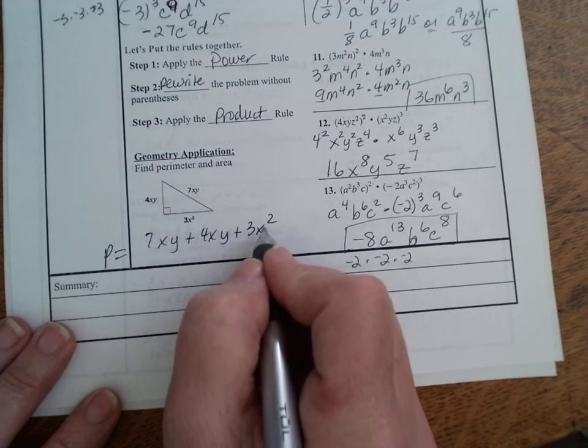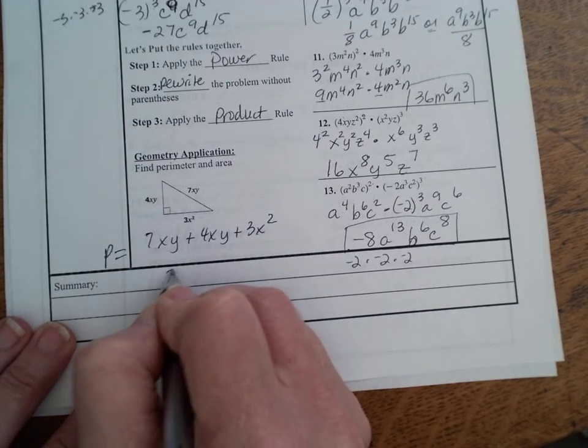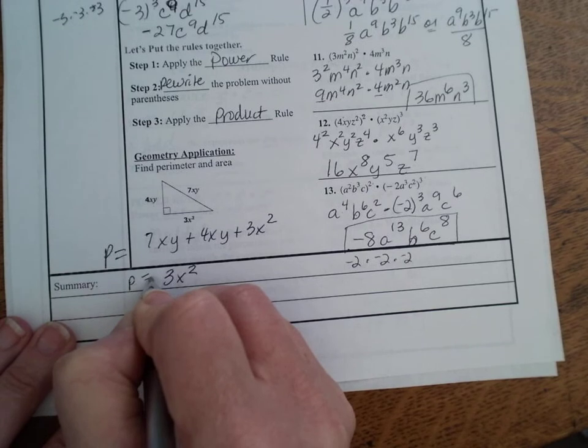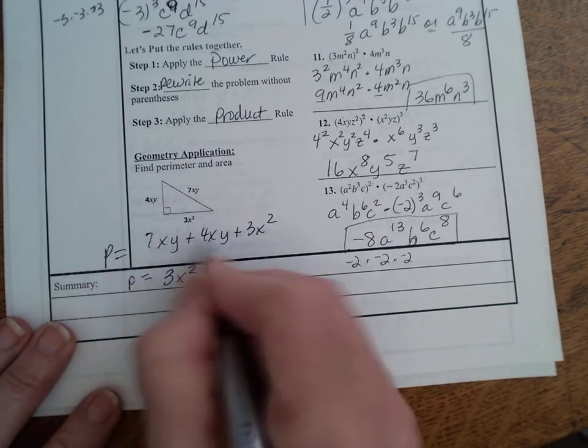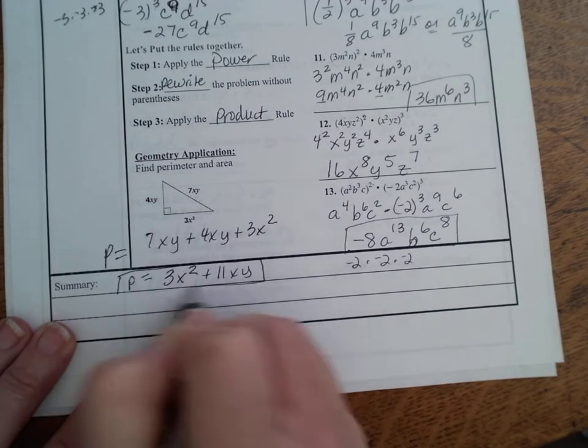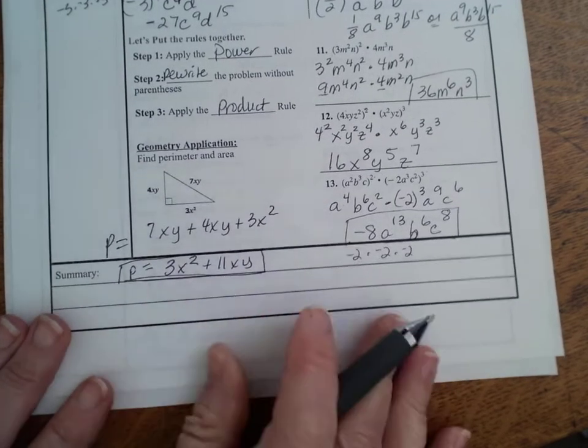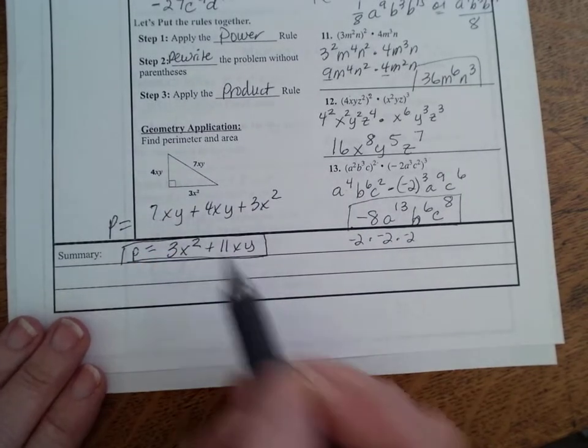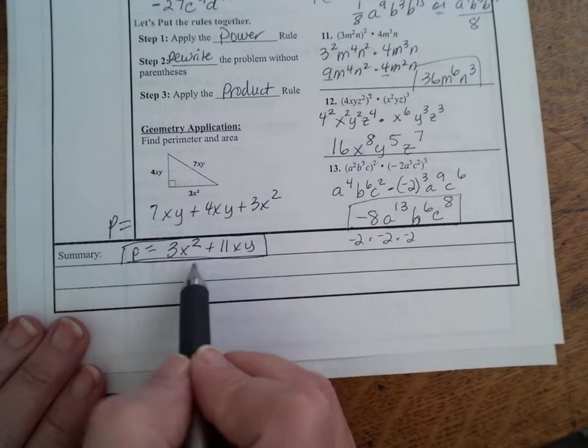So your final expression, I'm going to put x squared first just because it's a higher exponent. So your final expression for the perimeter is 3x squared plus 11xy. That is your final answer for perimeter. That's all you can do because you don't know what x equals, you don't know what y equals. You don't have enough information, they don't give you anything else. So that's your expression for the perimeter.